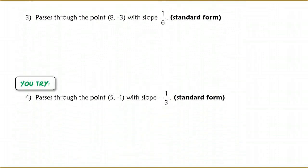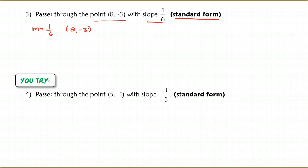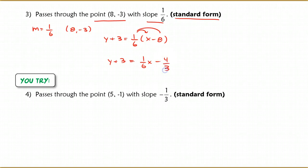Number 3: the line passes through the point (8, -3) with a slope of 1/6, and this time I want it in standard form. I know m = 1/6 and the point is (8, -3). This is not the y-intercept, so I put it directly into point-slope form: y + 3 = 1/6 (x - 8). I take the opposite of both coordinates. Now I distribute and get y + 3 = 1/6 x - 8/6, which simplifies to minus 4/3.